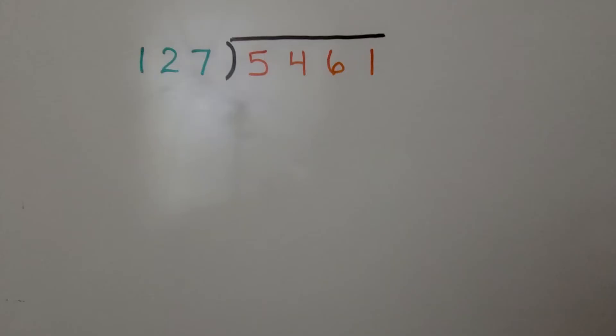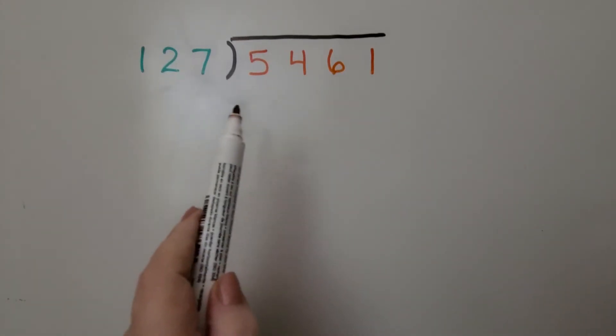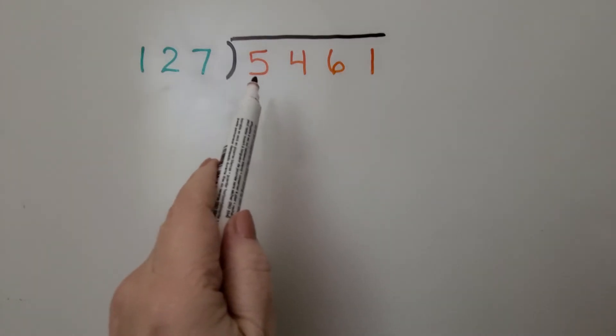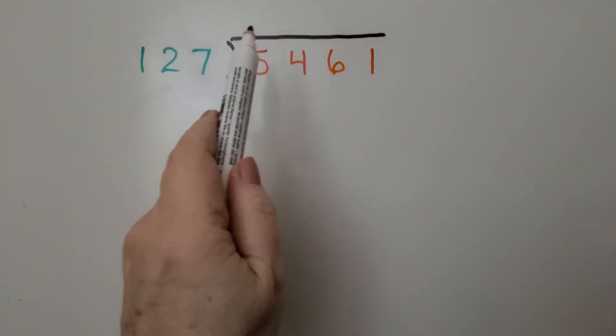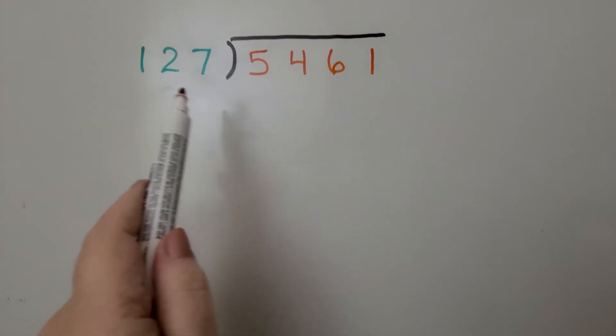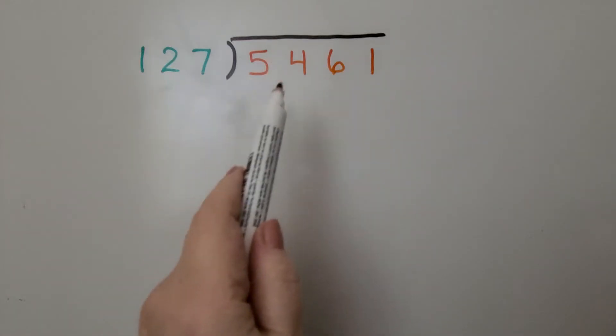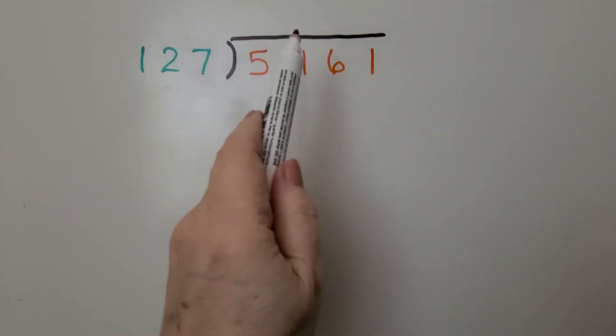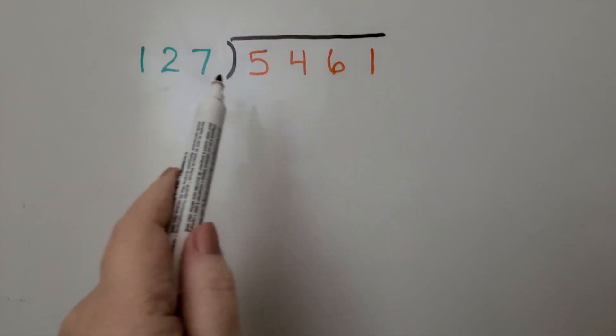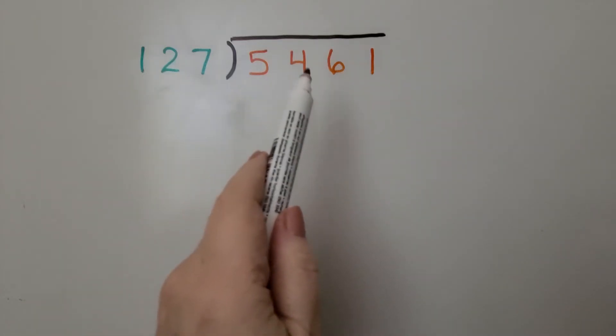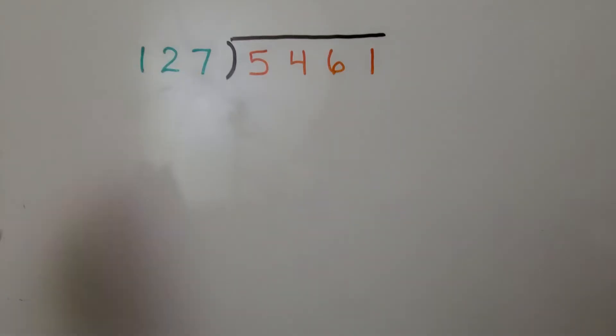Let's try it again. Here we have 5,461 divided by 127. We ask ourselves, can 127 fit into 5? Nope. Can 127 fit into 54? Nope. Can 127 fit into 546? Yes. How many times? Well, let's figure it out.